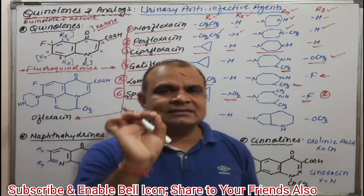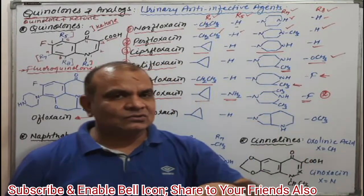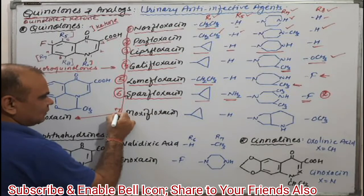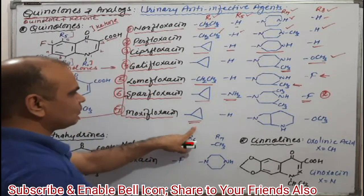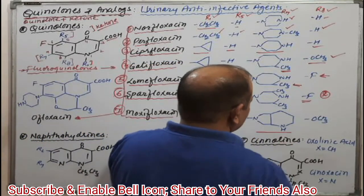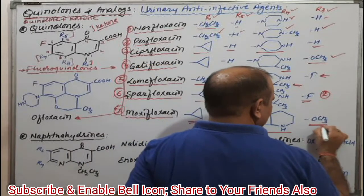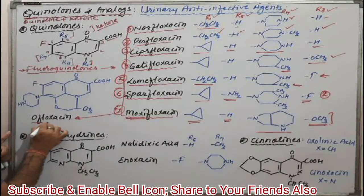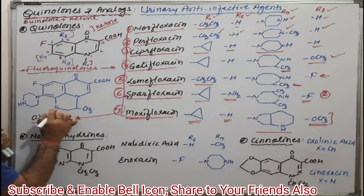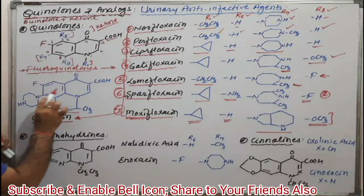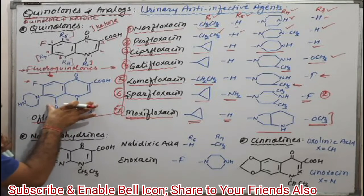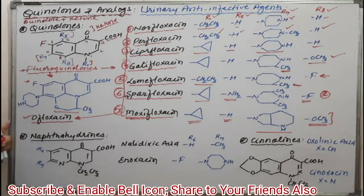Why sparfloxacin is entirely different — we will discuss in the SAR of quinolones or fluoroquinolones, why we are substituting the NH2 group and why we are substituting the fluorine group. Similarly, the seventh molecule is moxifloxacin: it has a cyclopropyl group at R1, hydrogen at R5, and R7 is a bicyclic heterocyclic ring system, with a methoxy group at R8. Next is ofloxacin, a very common drug — it is written separately because it has a combined ring structure, but it still comes under fluoroquinolones because the fluorine moiety and quinolone part are both present.